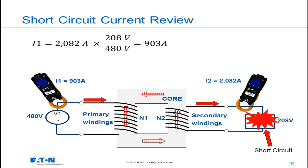From a selective coordination perspective, during a fault, the overcurrent protective device on the secondary would see 2082 amps, and the overcurrent protective device on the primary would only see 903 amps during this short-circuit event.